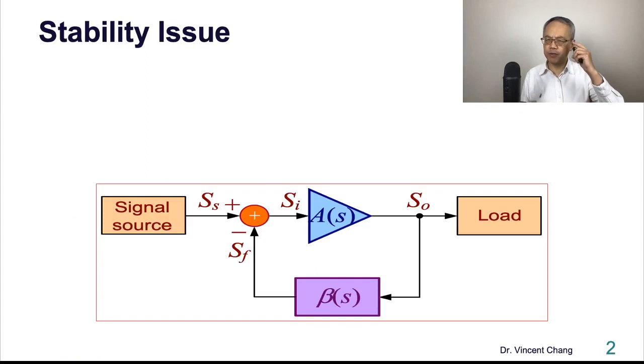Remember when we need to consider the stability issue. Two conditions: Number one, if there is feedback. Number two, if the amplifier open loop gain or feedback network involves frequency dependent behavior. Feedback and frequency dependent.